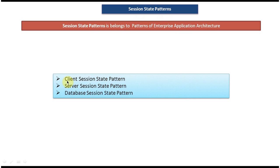There are three patterns which come under session state patterns. The first one is client session state pattern, the next one is server session state pattern, and the third and final one is database session state pattern. These three patterns belong to session state pattern, which belongs to Patterns of Enterprise Application Architecture.